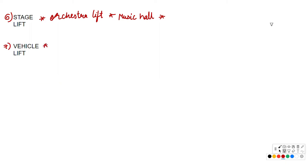Next is the vehicle lift. These are used within buildings with limited space where there isn't room for a ramp. They move cars or vehicles from one level to another and have a capacity of 2 tons.